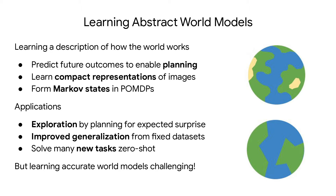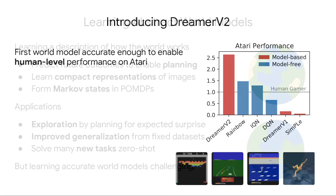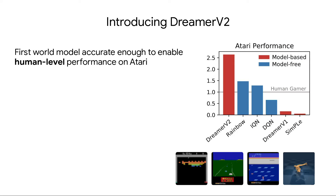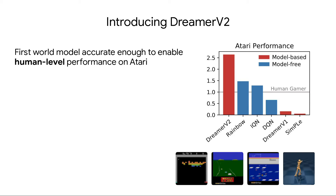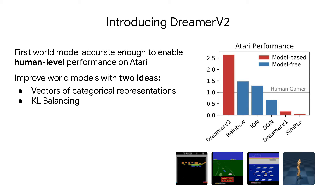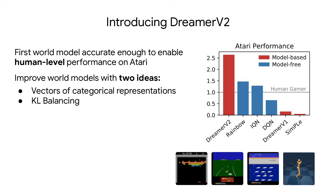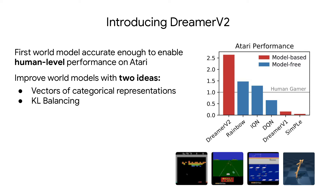But learning accurate world models has been a big challenge. Today, we introduce DreamerV2, the first agent based on a world model that is accurate enough to enable human-level performance on the competitive benchmark of 55 Atari tasks. DreamerV2 substantially improves over previous world models, shown in red, using two ideas: vectors of categorical representations and KL balancing.